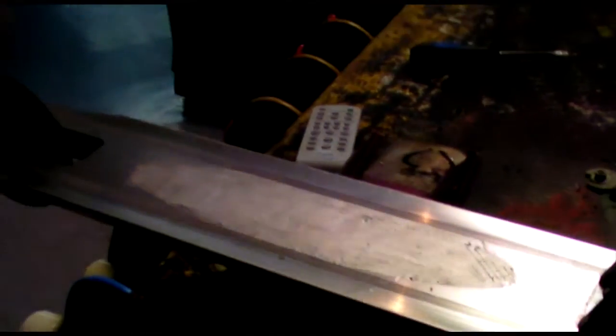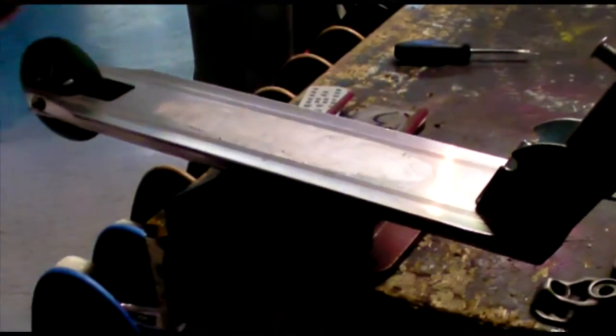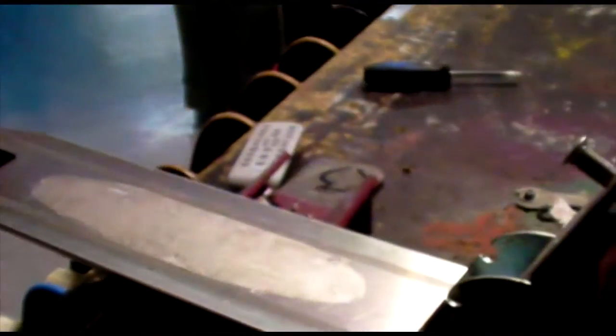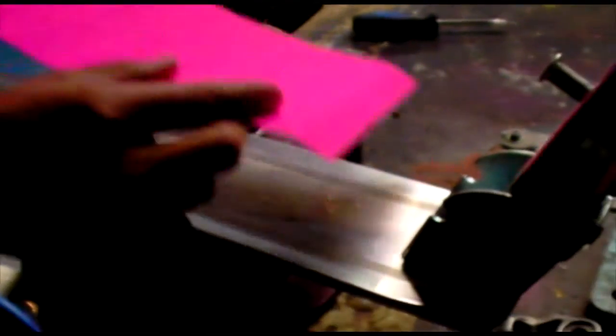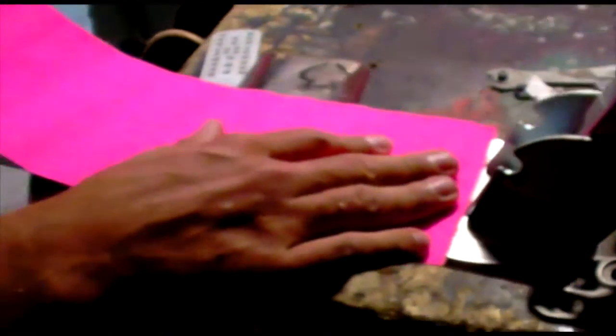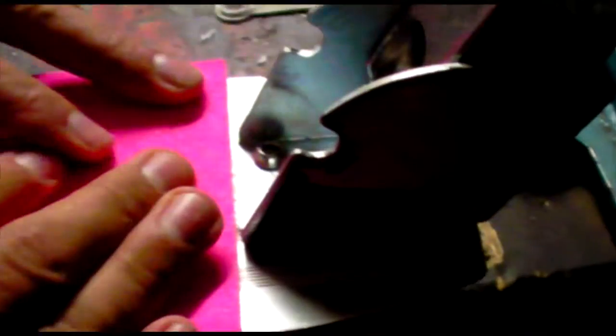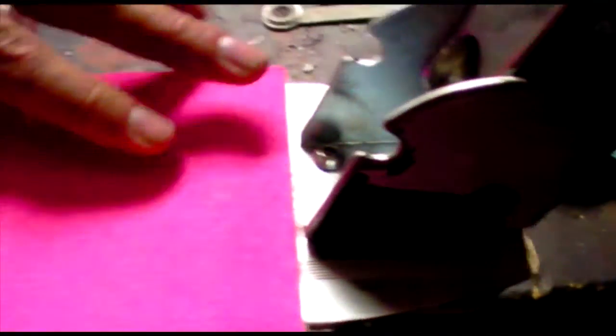Once you have your old grip tape off, it should be nice and smooth, just make sure you clear any stuff off there. You want to get your grip tape, lay it down at the front there, just make sure you give a little bit of space for your folding mechanism.